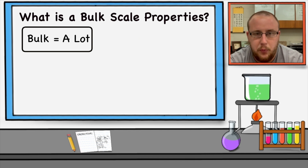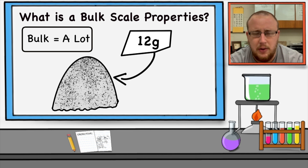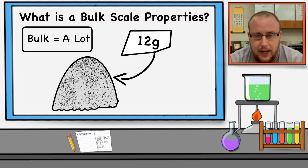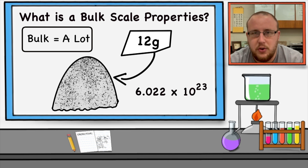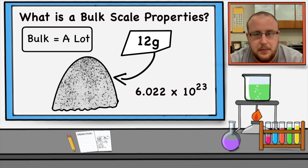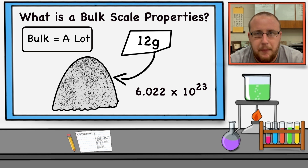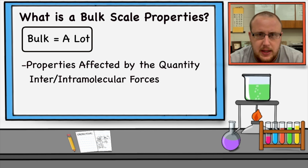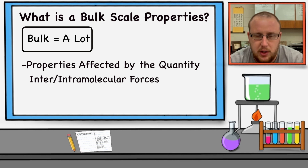For example, 12 grams of carbon is not a lot — we don't think 12 grams of something is a lot. But in reality, if we have 12 grams of pure carbon combined together, that's around 6.022 times 10 to the 23rd power of carbon atoms. I can't even say that number without putting it in scientific notation. Bulk scale properties are properties that are affected by the quantity of inter- or intramolecular forces.